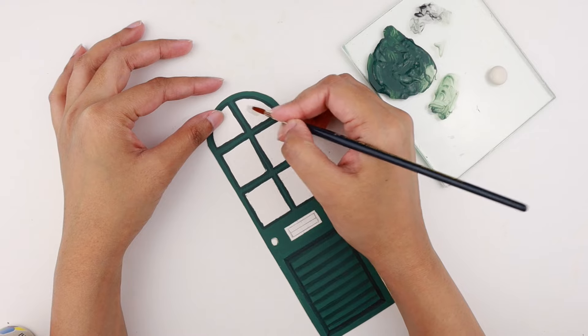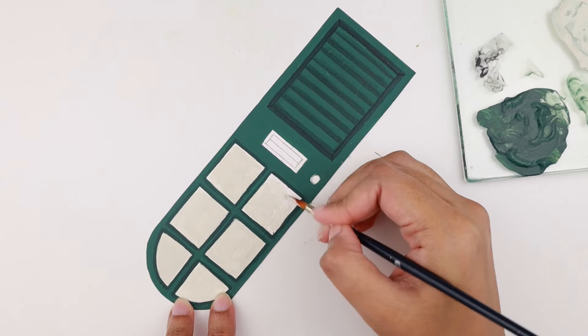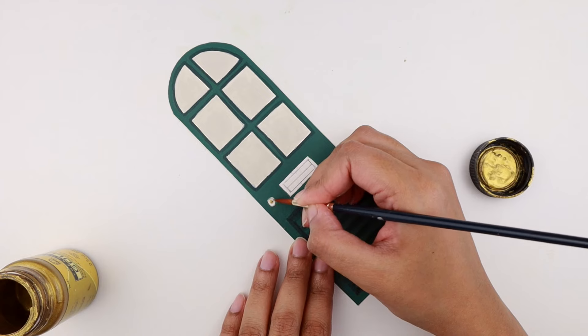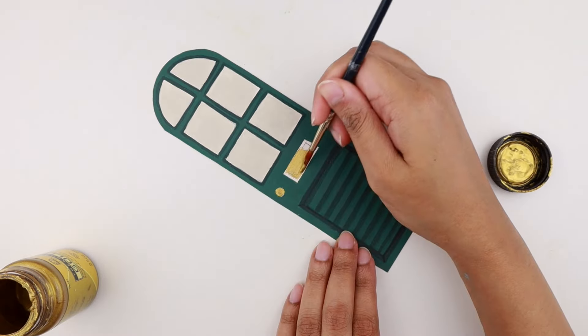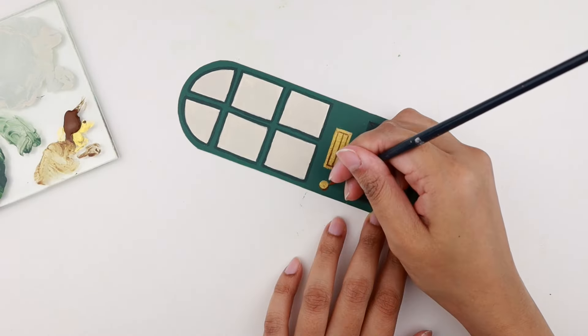For filling in the panels, I'm using a light gray acrylic paint. To paint the door knob and the letter slot, I'm using a gold paint. Then I'm adding the details on the letter slot with a dark brown paint.